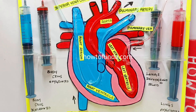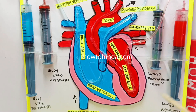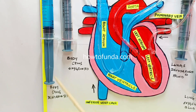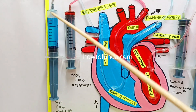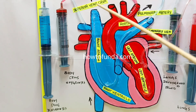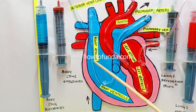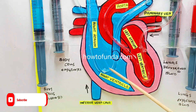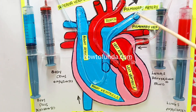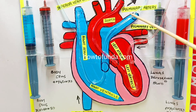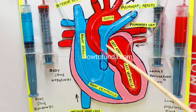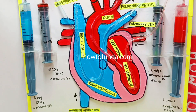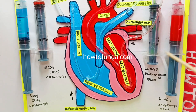Now I will explain how the overall flow happens. Whenever the body has deoxygenated blood, it goes via the vena cava - that is the entry point. This blue color represents deoxygenated blood. It comes to the right atrium, again goes to the right ventricle, from right ventricle it goes to the pulmonary artery, and from pulmonary artery it goes to the lungs, where we are sending the deoxygenated blood.